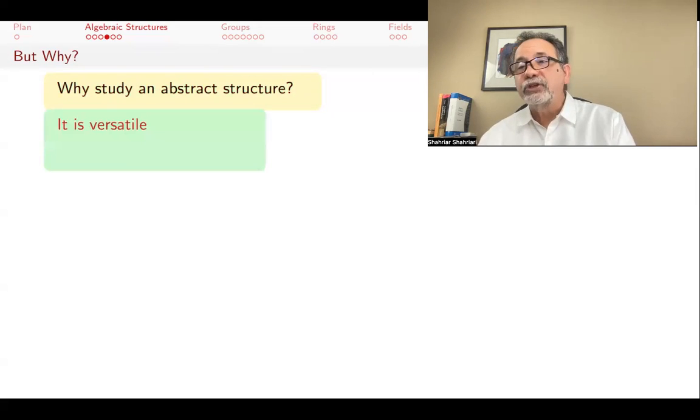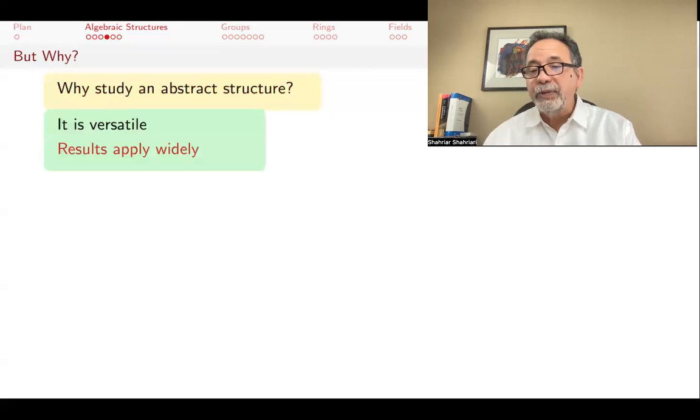One reason for studying a vector space, or a group, or a ring in abstract, is that the results are versatile. There are many examples of vector spaces, or groups, or rings, and so if you can say something about groups in general, then it applies to all of them. So instead of proving the same thing over and over again, for many different manifestations of group, you prove them once for all, and for all of them.